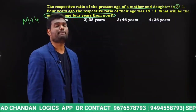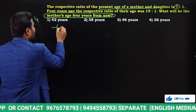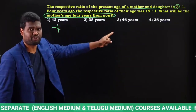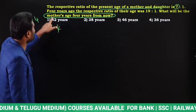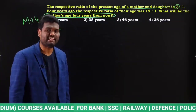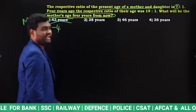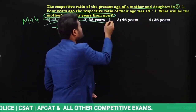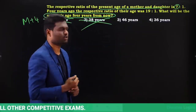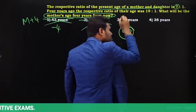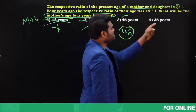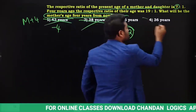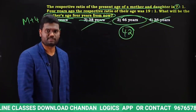To find the mother's present age from the options, subtract 4 from each option. 42 minus 4 is 38 — not a multiple of 7, wrong. 38 minus 4 is 34 — not a multiple of 7, wrong. 46 minus 4 is 42 — yes, 42 is a multiple of 7, so this can be our answer. 36 minus 4 is 32 — not a multiple of 7, wrong. So the answer is 46.